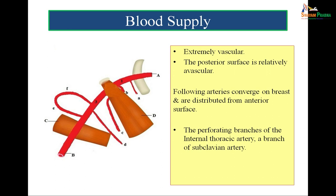The breast is a very vascular organ with rich blood supply. In the figure, 1, 2, and 3 show the parts of the axillary artery and D is the pectoralis minor muscle. The first part of the axillary artery gives one branch: the superior thoracic artery. The second part gives two branches: the acromiothoracic and lateral thoracic branches. These branches of the axillary artery supply the breast, as do the perforating branches of the internal thoracic artery.